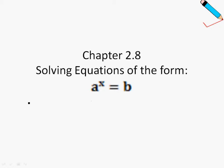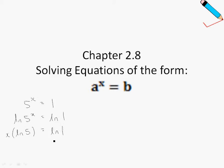For example, if I have 5 to the power of x equals to 1. To solve for x, I will take ln on both sides of the equation. So ln 5^x equals to ln 1. The power x can be brought over to the front, so this becomes x times ln 5 equals to ln 1. ln 1 is just 0, so x times ln 5 is 0. Finally, x is just 0 divided by ln 5, which is just 0.